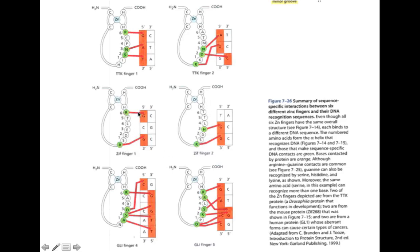Because the alpha helix sequence differs between fingers, the first finger is going to recognize a different DNA sequence while the second finger recognizes an entirely different sequence. The same is true for ZIF268 — the amino acid sequence of the two alpha helices is quite different, so they recognize different DNA sequences. This applies to GL1 as well.